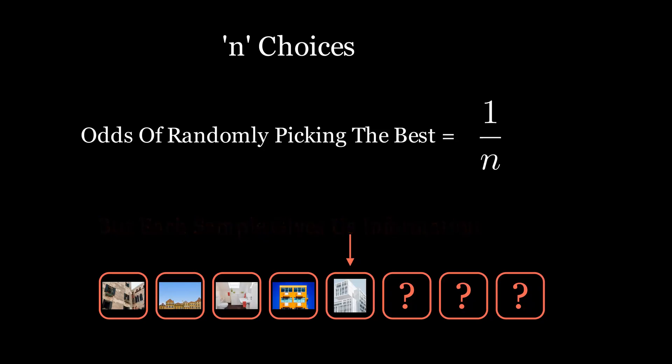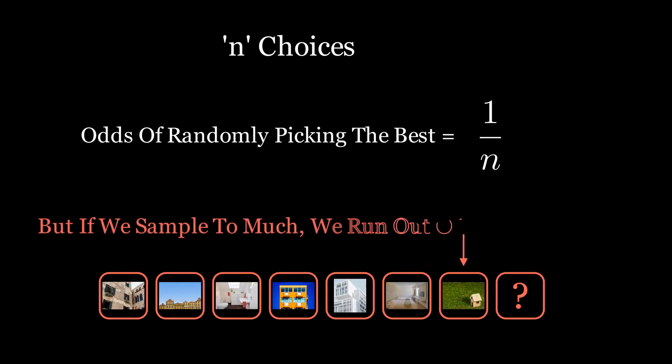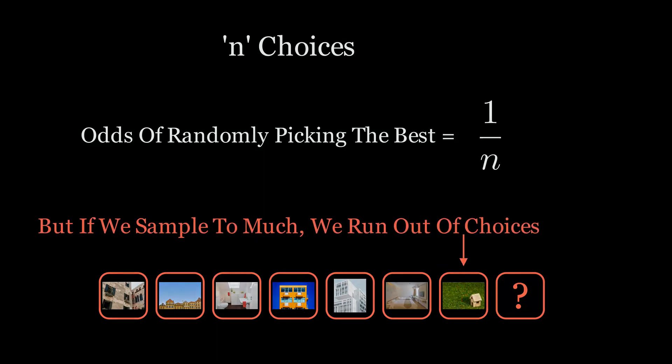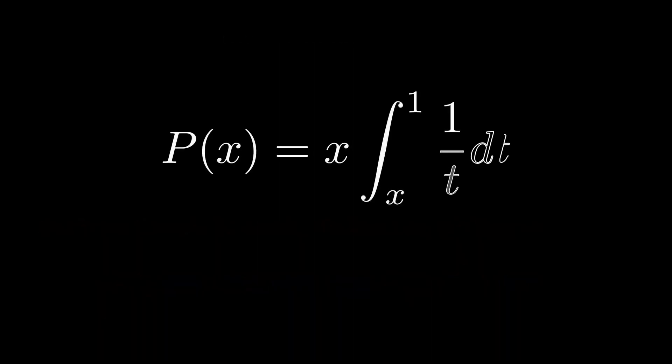Unfortunately, there's a trade-off. Because the more you sample, the more likely you are to hit the absolute best in one of your samples and throw it out during your information gathering. It can be shown that for a large number of samples, your probability of selecting the best is a result of this equation.